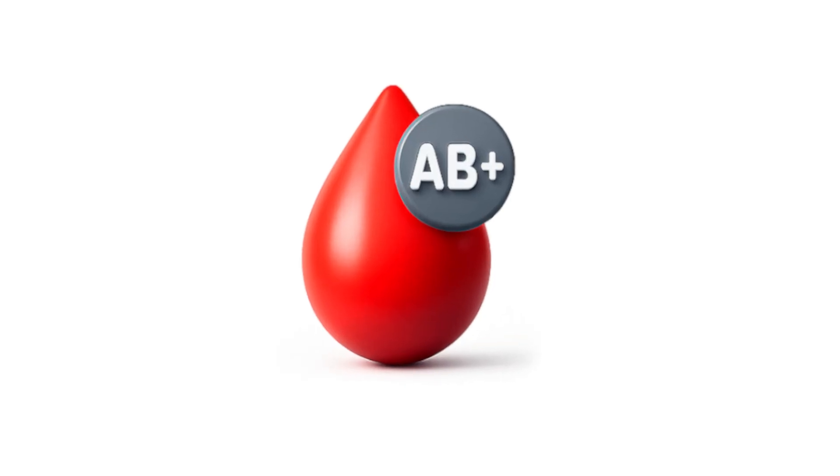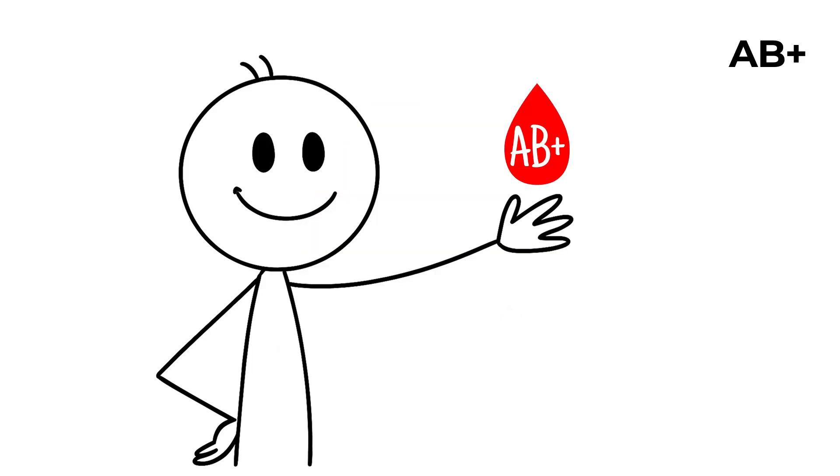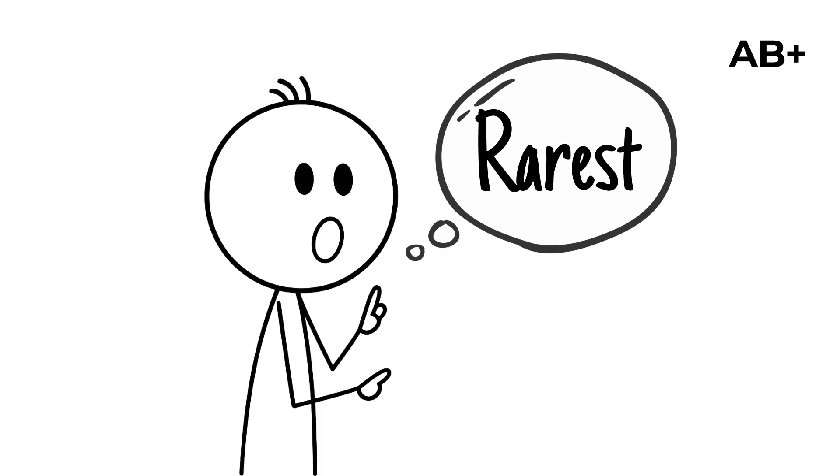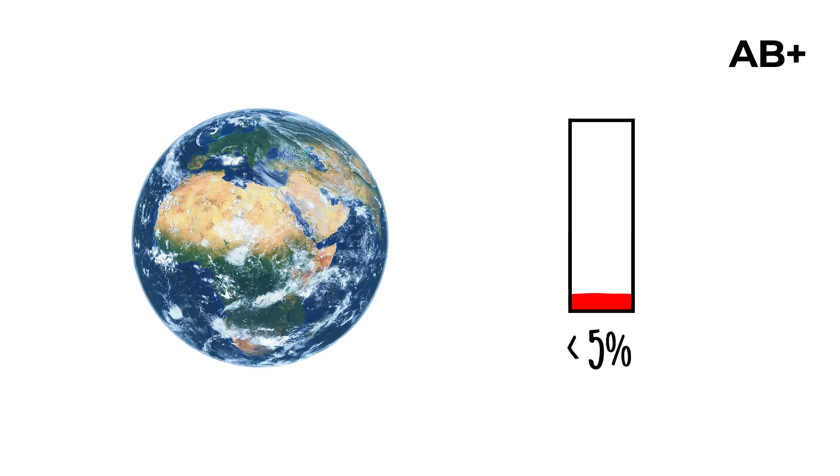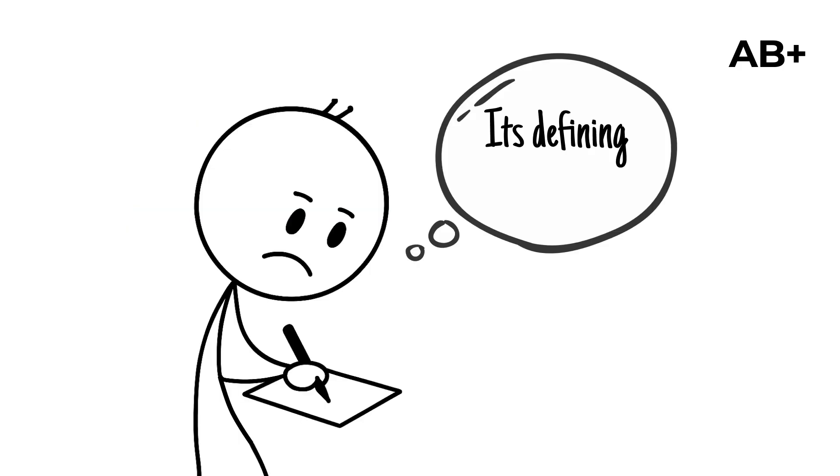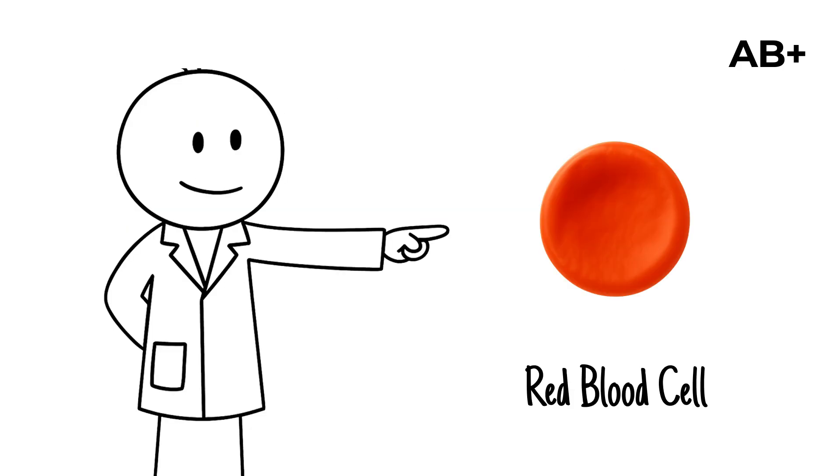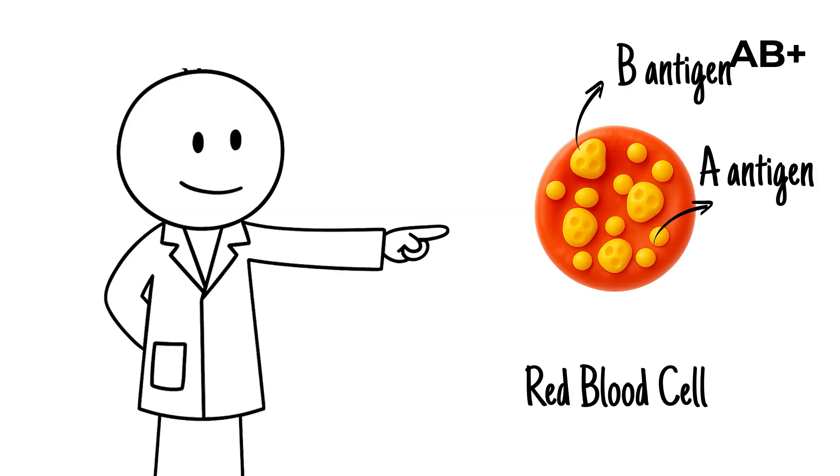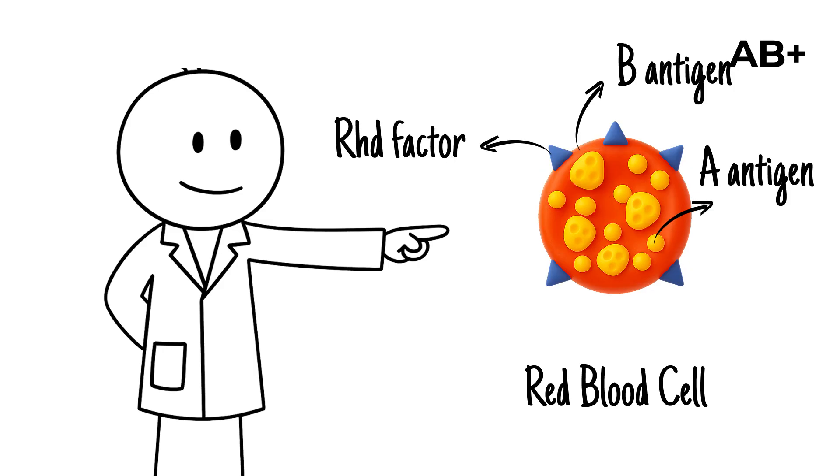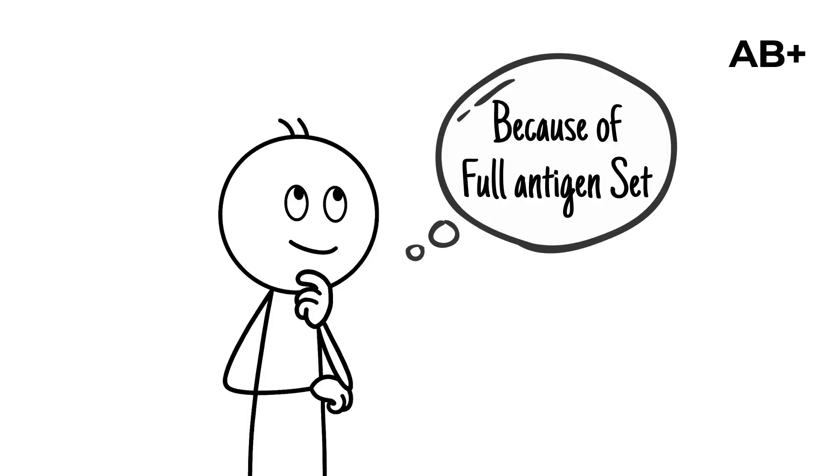AB positive is the rarest of the major positive blood types, carried by less than 5% of the global population. Its defining trait is the presence of both A and B antigens on red blood cells, along with the Rh D factor. Because of this full antigen set, AB positive individuals can receive red blood cells from any donor.